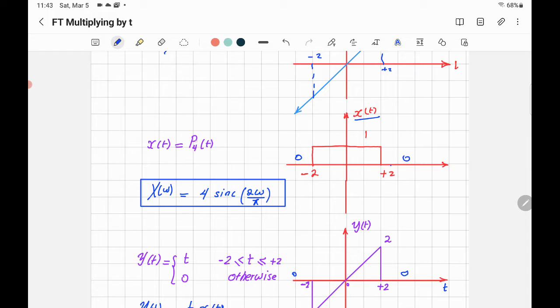What's x of t? X of t is a rectangular pulse of width equal to 4 because it starts from negative 2 up to 2 and symmetric, so that would be x of tau sinc omega tau over 2 pi. So if you replace tau by 4, this will cancel, you have 2 omega over pi.